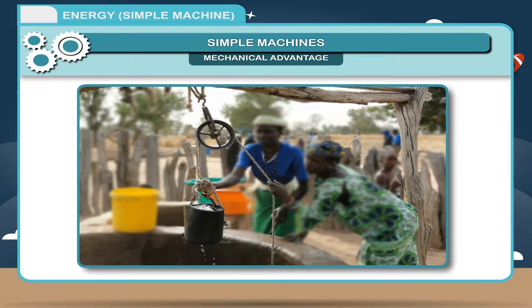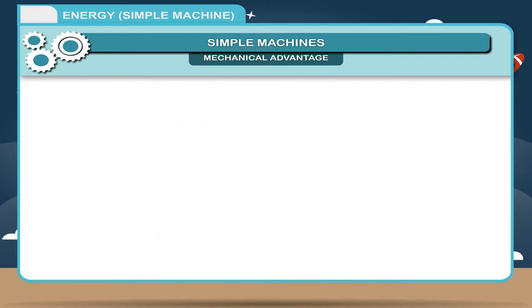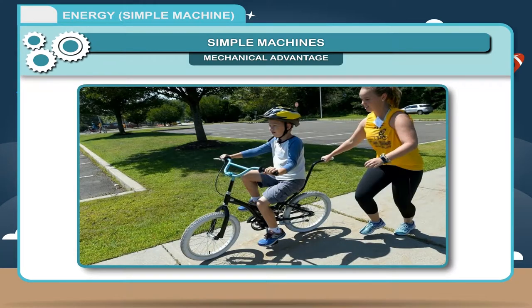To apply the force in a desired direction. For example, in a single fixed pulley, effort is applied in the downward direction. To gain in speed. For example, instead of walking, if we use a bicycle, it will take less time to reach a place.